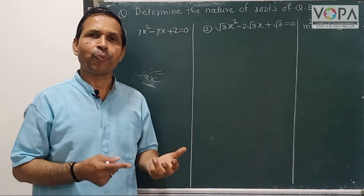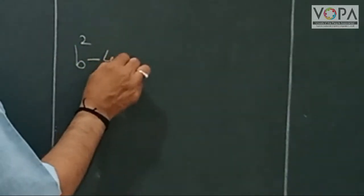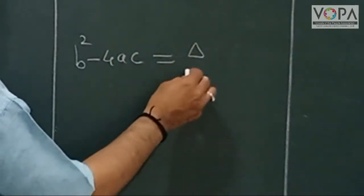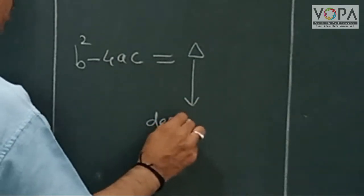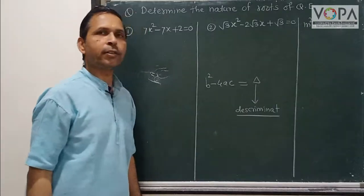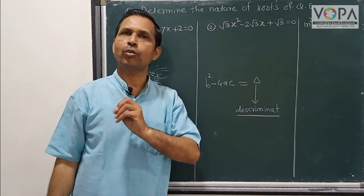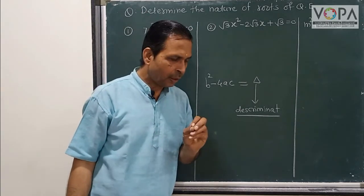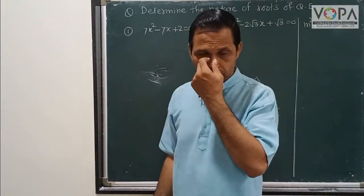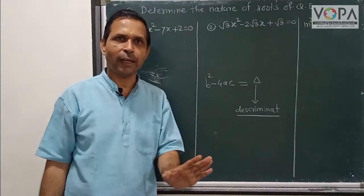First we have to find the value of b²-4ac. The value b²-4ac is called delta, and it is also called the discriminant. We have to find the value of the discriminant of the quadratic equation.